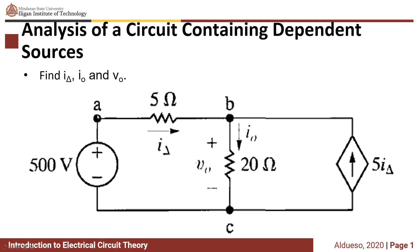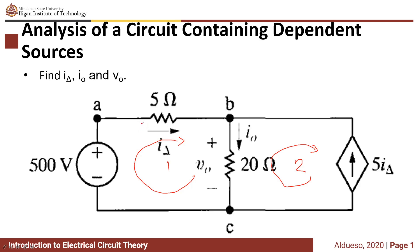Looking at the example, we have the nodes labeled already, so we need to label the loops. We have only two loops here: loop one and loop two. For the voltage across this 5 ohm resistor, for convenience, since the current is going towards this direction, to conform with the passive sign convention, let's assume the polarity of the voltage to be positive and negative, and let's label this as V5.